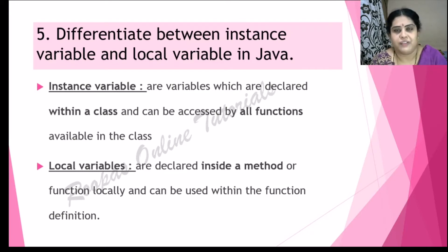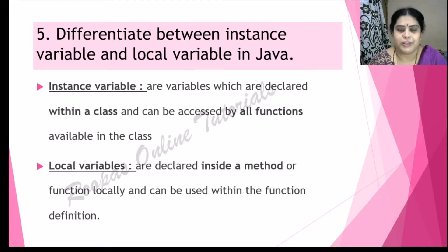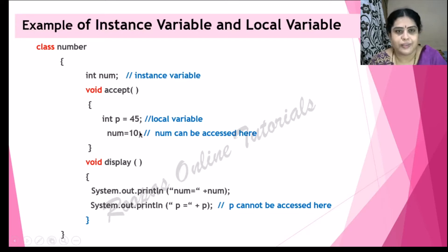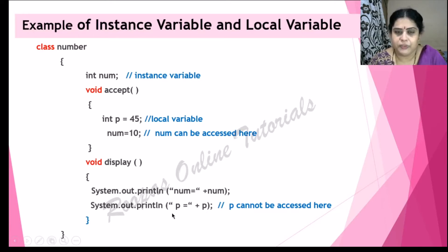Differentiate between instance variable and local variable in Java. Instance variables are variables declared within a class and accessed by all the functions available in the class. Local variables are declared inside a function or method and can be used only within that function. For example, in class Number: int num is an instance variable, whereas int p declared inside the accept method is a local variable — if you try to access p in the display method, it will give an error.